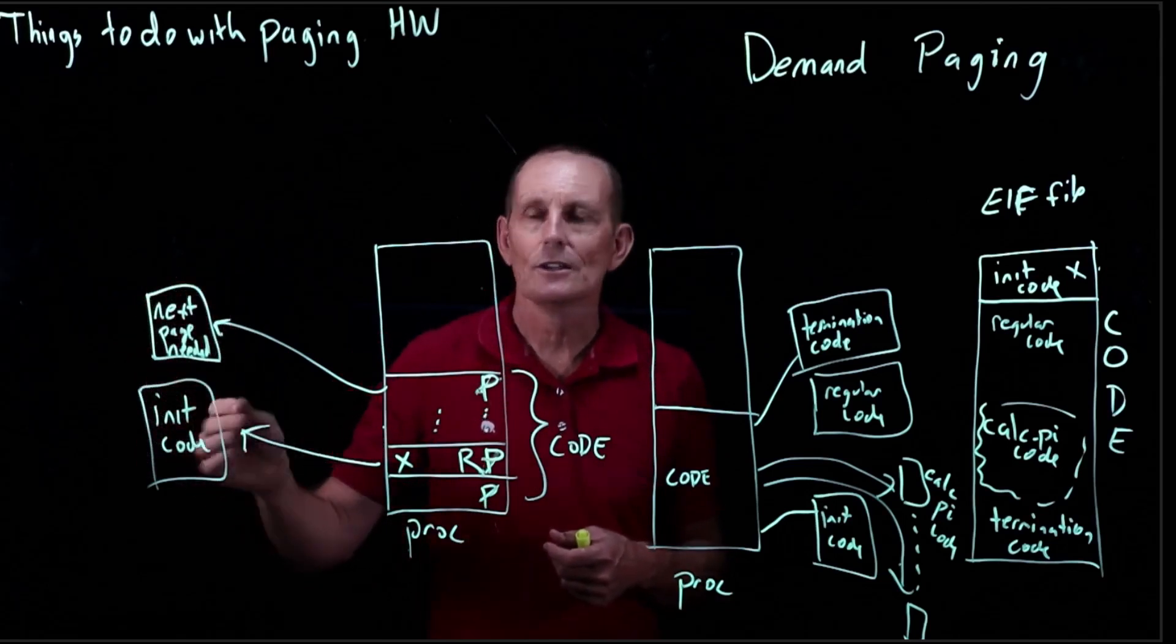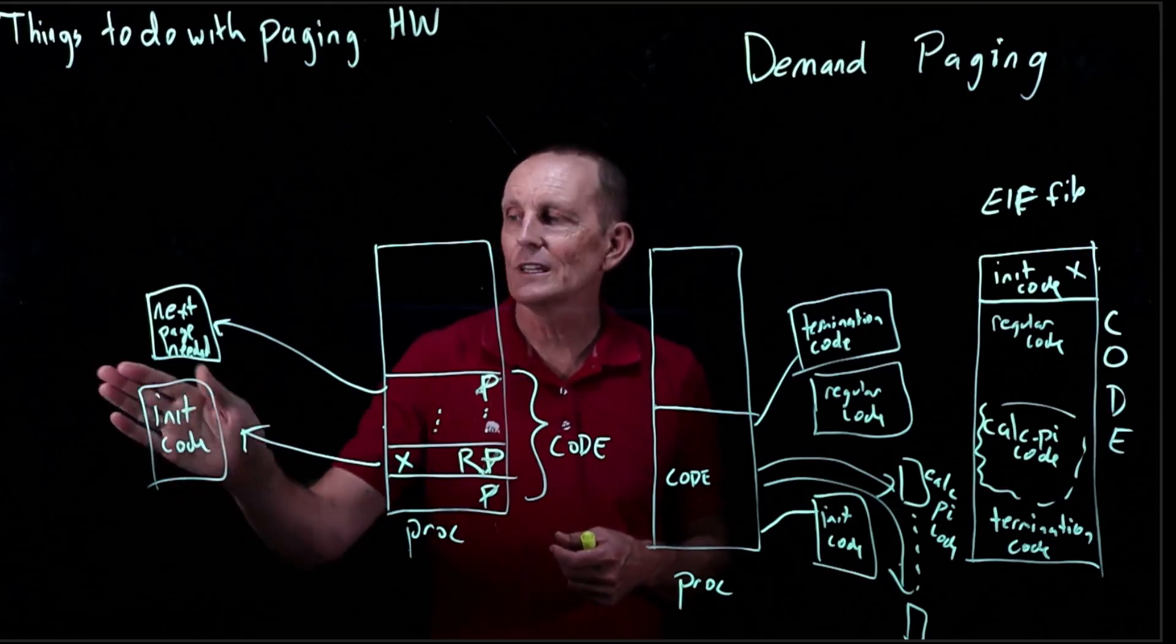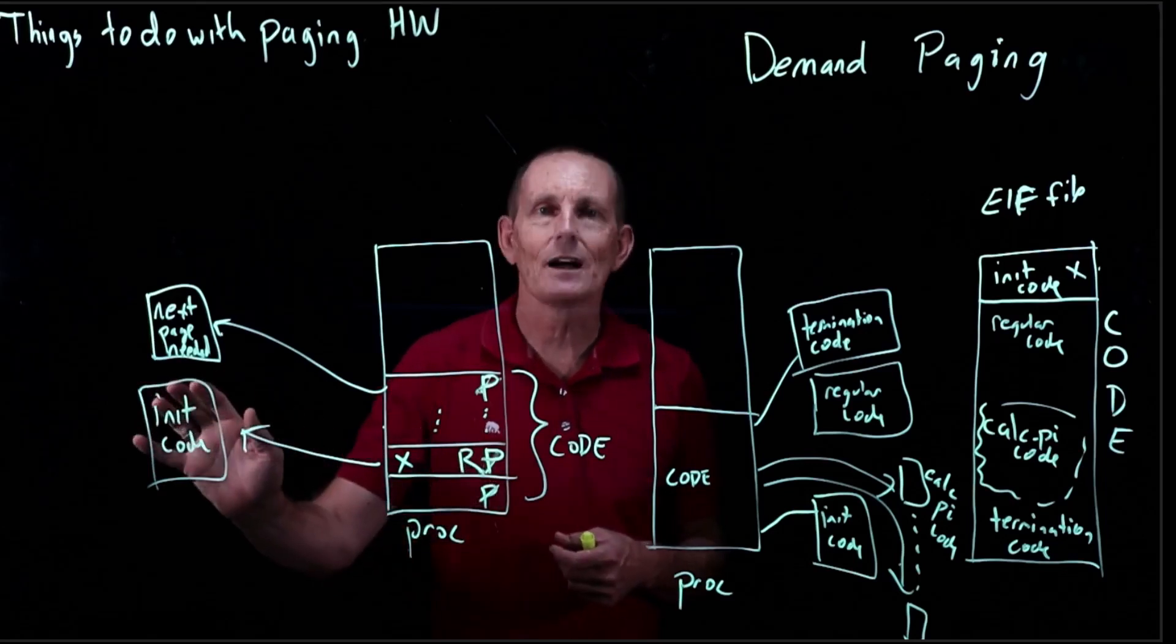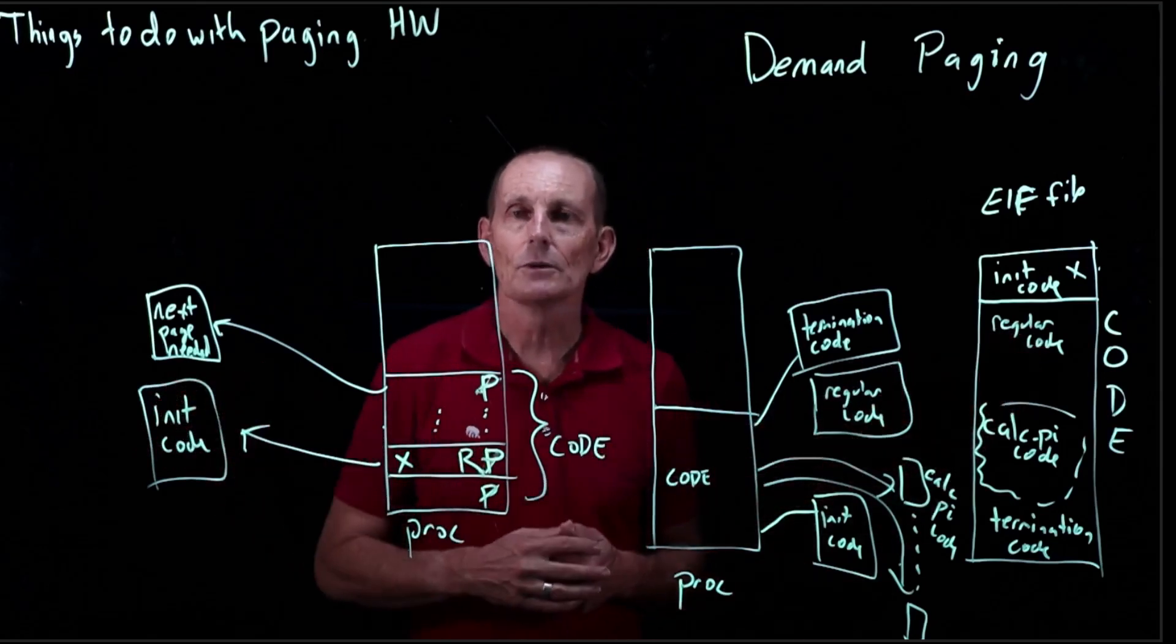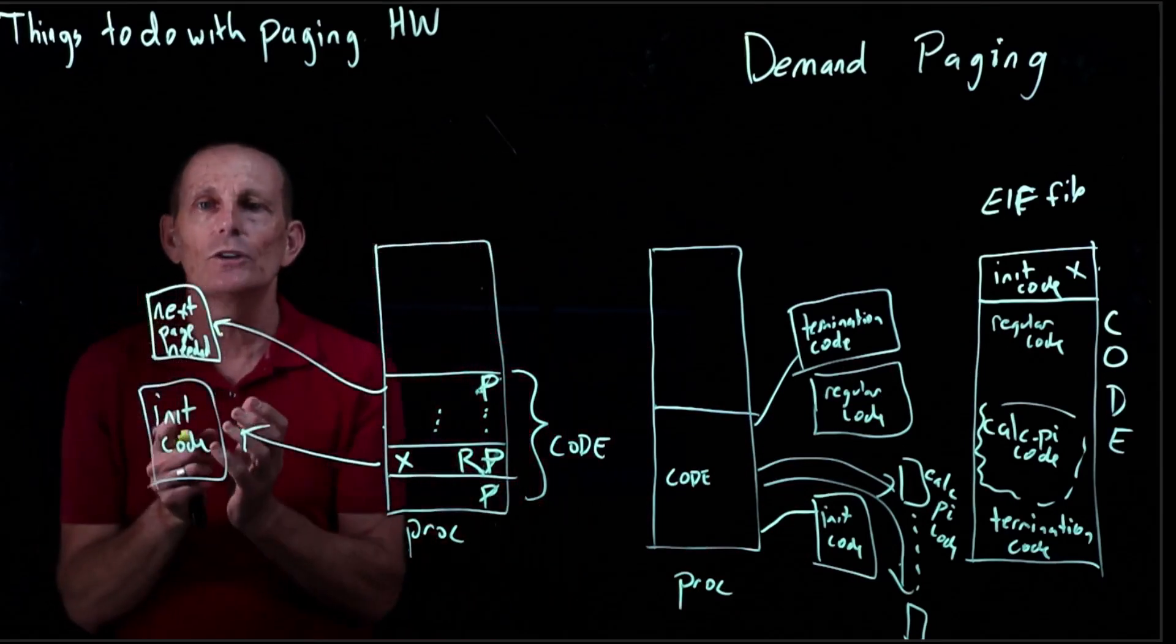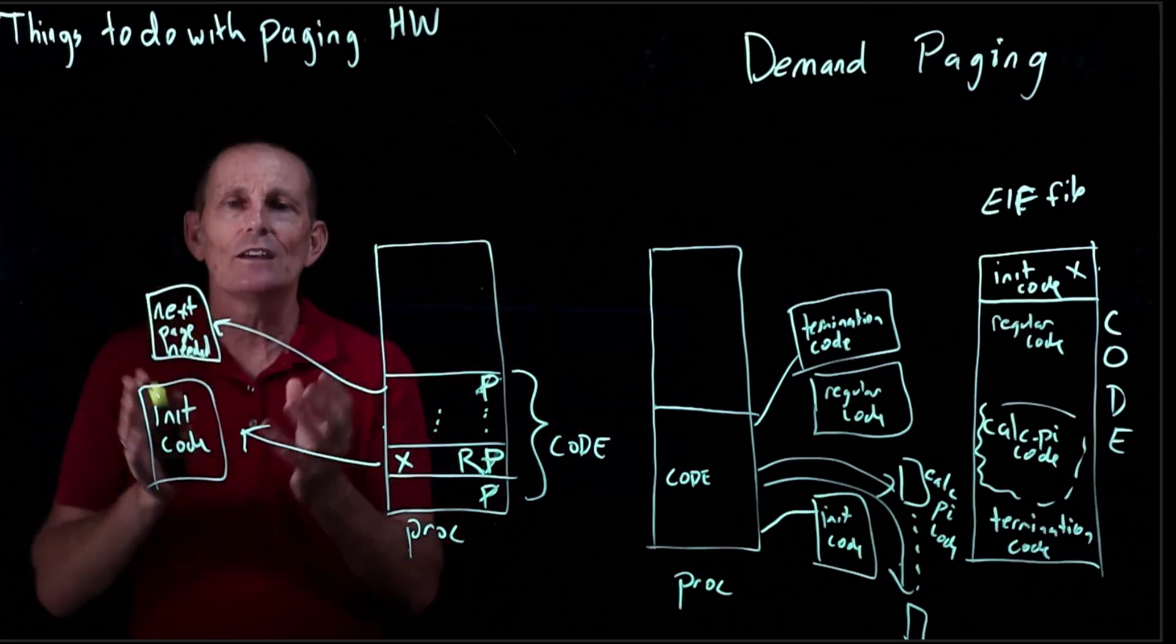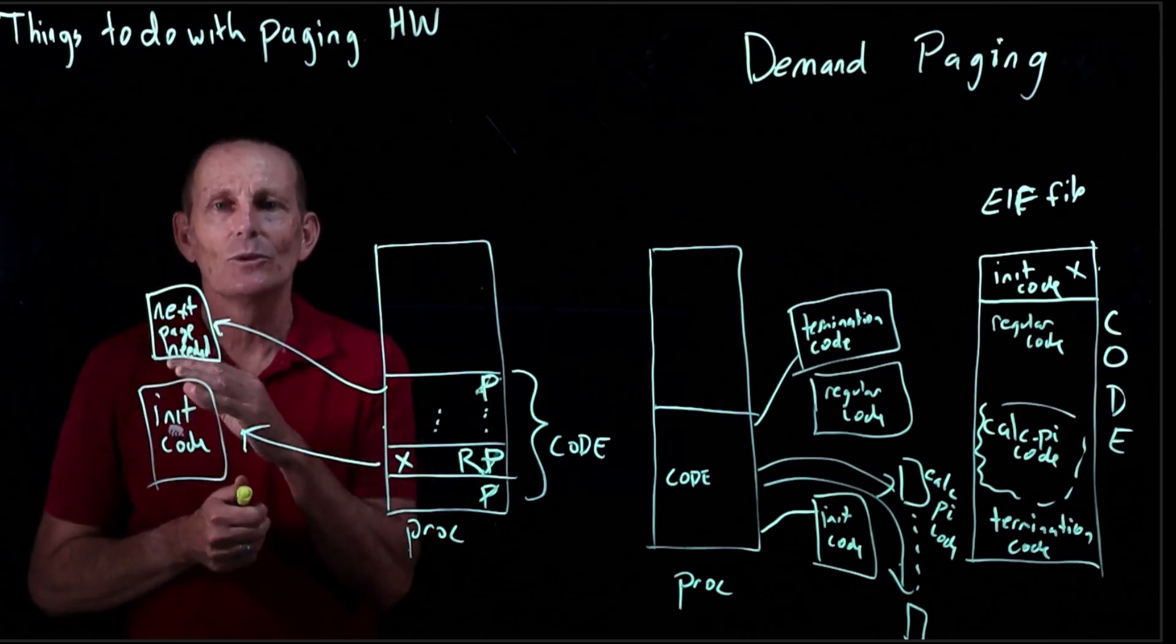For instance, the initialization code may never be used again. So maybe we haven't used this page for a long, long time, and therefore we can just go ahead and free it and mark this again as not present. If we ever need something on this page, we can just reload it from the executable. So that would allow us to have, maybe instead of all of the pages of code that we've read from so far in the program, let's just keep the set of pages of code that we've recently used. And any that have been far in the past, we'll just go ahead and let them be reused.